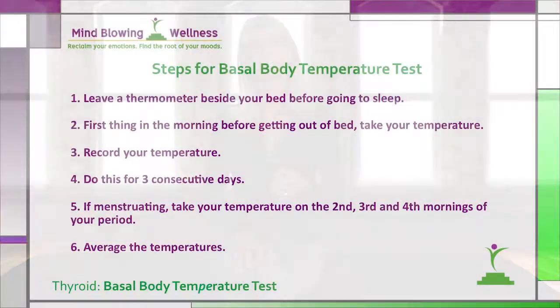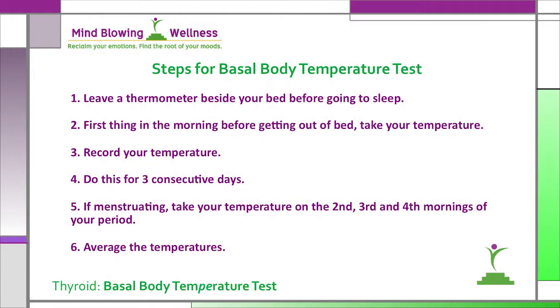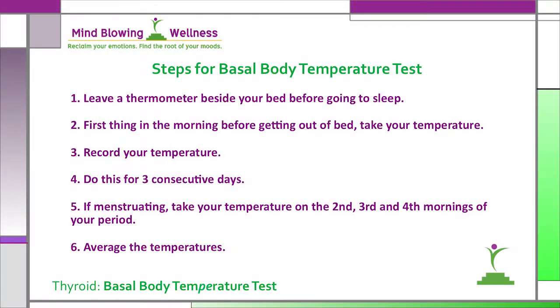First thing in the morning before getting out of bed, place the thermometer under your tongue and lay very still until the temperature registers for your type of thermometer. Remember that mercury thermometers require 10 minutes. Record your temperature and do this for three consecutive days. If you're menstruating currently, it's important to only take the temperature on the second, third, and fourth mornings of your period.